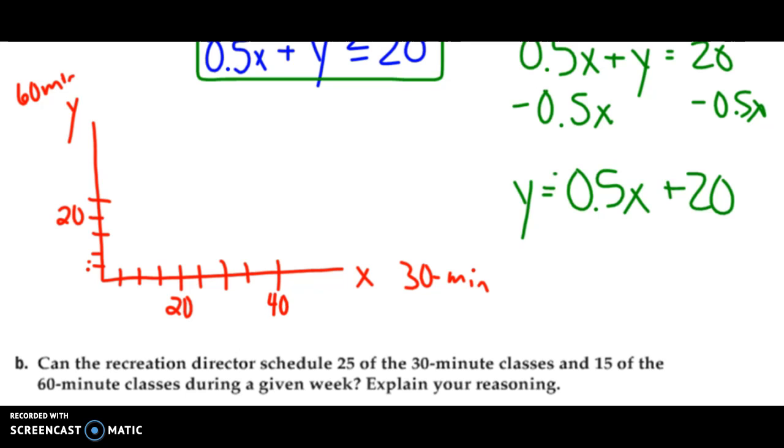So I'm going to graph it. So you'll see that it starts at 20 on the y-intercept. So it would be right there. And my slope is negative 1/2. So I'd go down 1 over 2. Even though those are 5, I can still do the same. So down 1 over 2. Down 1 over 2. Down 1 over 2. And so this right here is my line. Now, I think about my boundary.